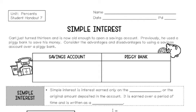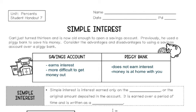In this problem, Carl just turned 13 and is now old enough to open a savings account. Previously, he used a piggy bank to save his money. Consider the advantages and disadvantages to using a savings account over a piggy bank. A savings account is going to earn interest, but it's a little bit more difficult to get your money out immediately. With a piggy bank, you don't earn interest, but the money is at home with you.